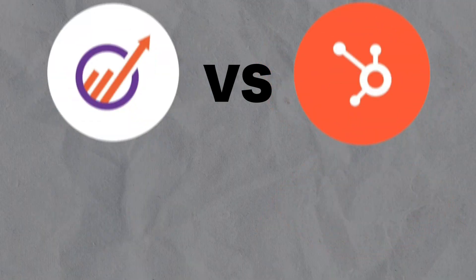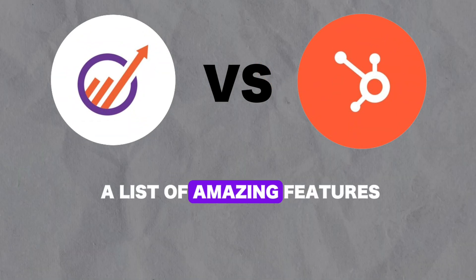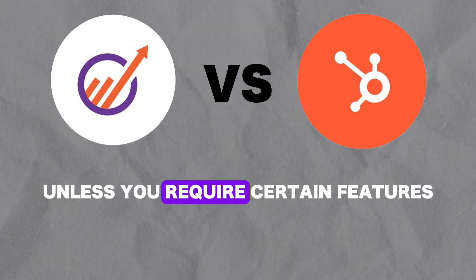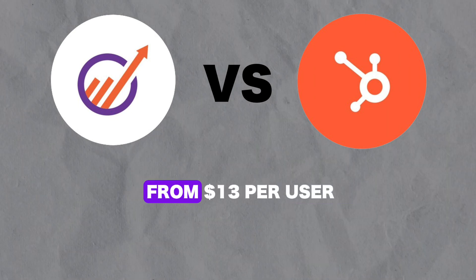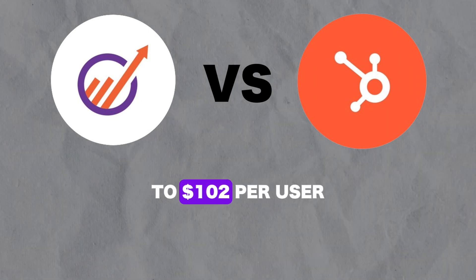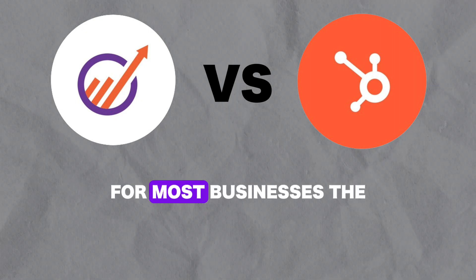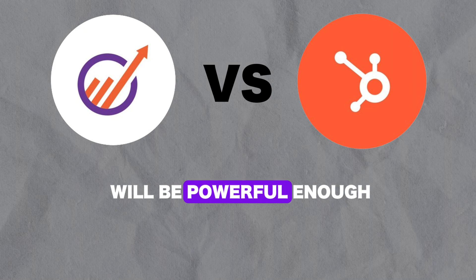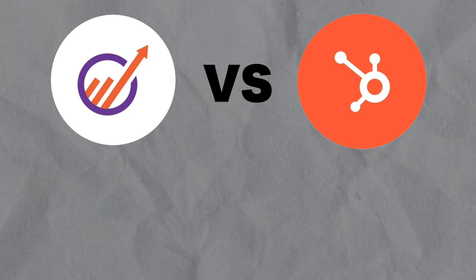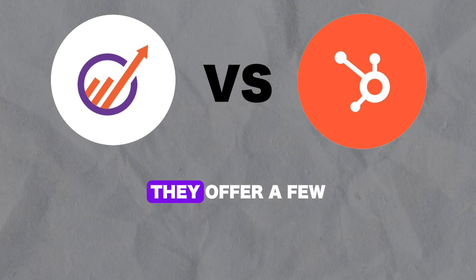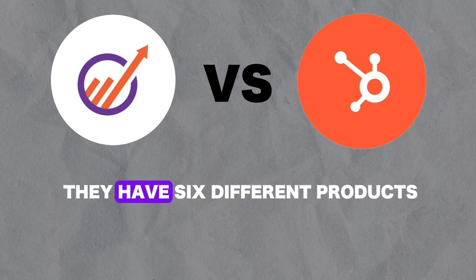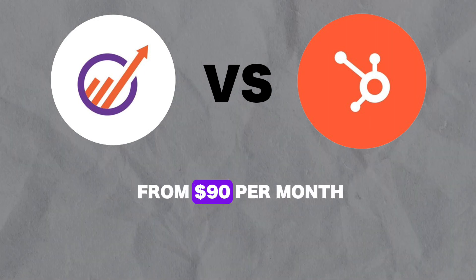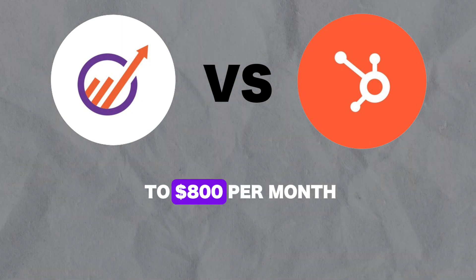Next, we'll take a look at their pricing options. EngageBay has a free plan that will give you a list of amazing features. You don't even need to get a paid plan unless you require certain features or exceed some free plan limitations. Their paid plans range from $13 per user per month to $102 per user per month. For most businesses, the $13 per month plan will be powerful enough, but you can decide that for yourself. HubSpot's pricing is a little bit more complex. They offer a few free features, which can be helpful when starting out. On top of that, they have six different products with pricing plans ranging from $90 per month per user all the way up to $800 per month.